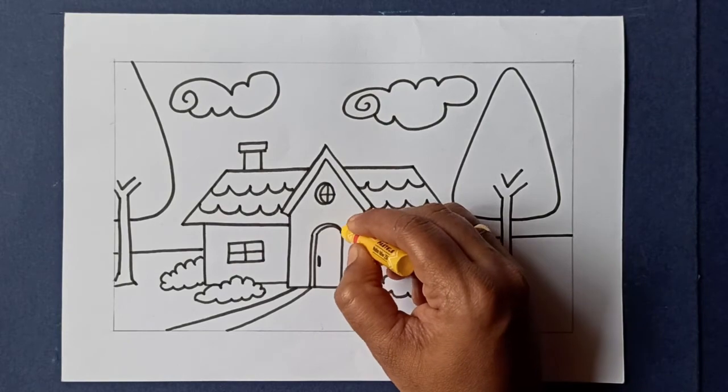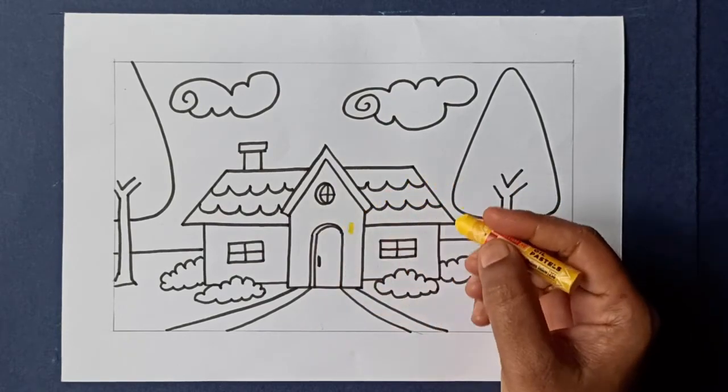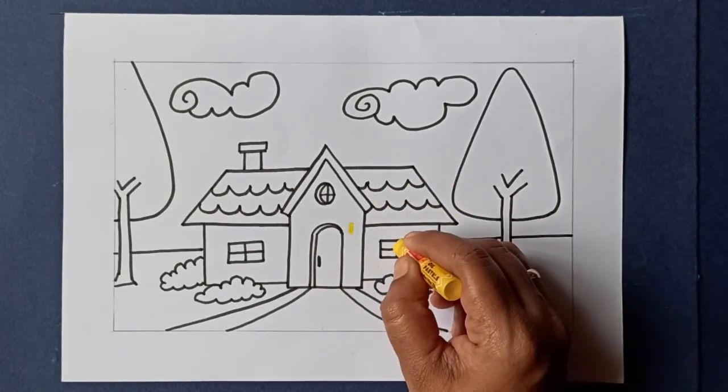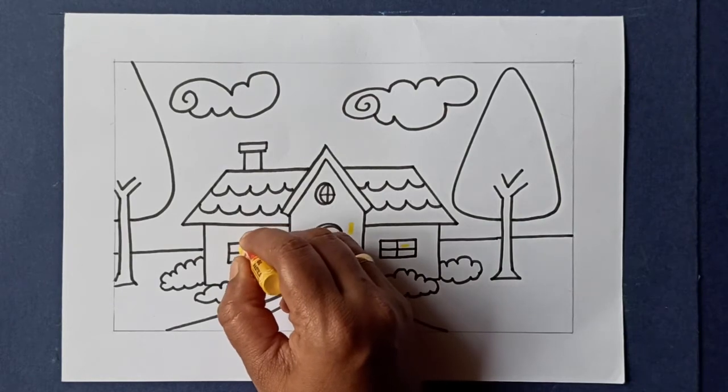Let's color the home now. Add deep yellow for the wall, window, and chimney.